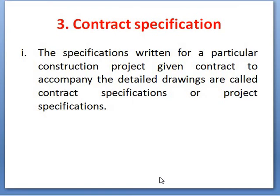Number three is contract specifications. When work has to be executed on a contract basis, specifications are written as per the requirements of the owners. The contractor will execute the things the same way on site as stated in those specifications. The specifications written for a particular construction project, given with the contract to accompany the detailed drawings, are called contract specifications.